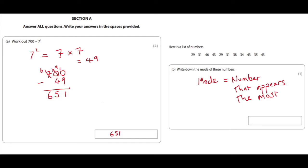Now let's go through these numbers. We've got a 29, 31, and a 46, and a 43. There's another 29 there, so there's two of those. There's another 31. There's a 38. There's a 34. There's another 43. There's a 35 and another 43.